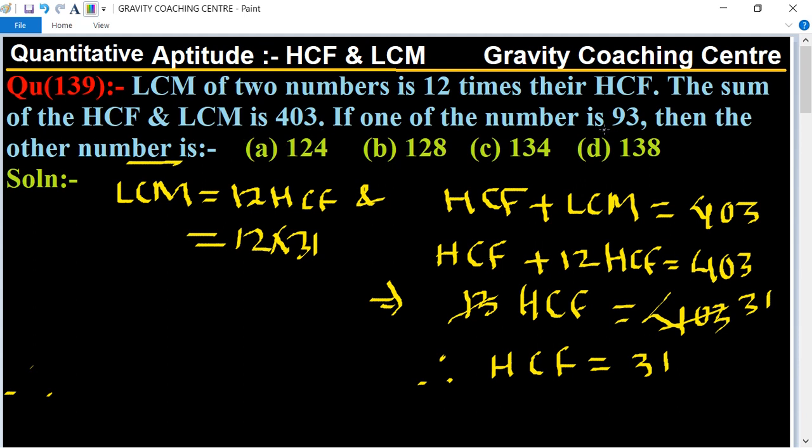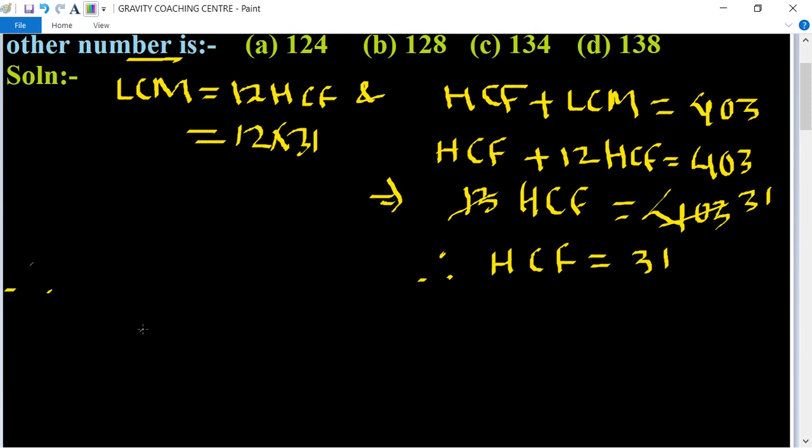If one of the numbers is 93, then what is the other number? We know the formula: first number multiply second number equals HCF multiply LCM.